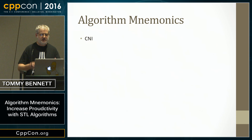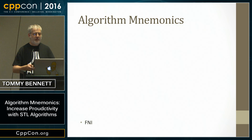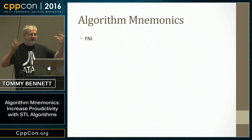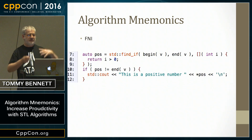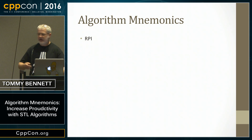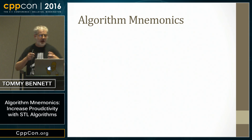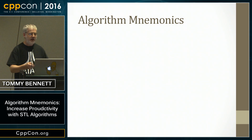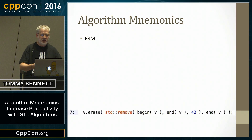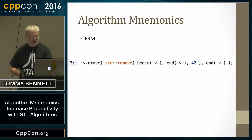What if CI could expand to this? Or what about FI — and all of a sudden this all appears? What about RPI, and this all appears? And it works for idioms too, like the erase-remove idiom — ERM expands to all this. You're saying, well, this really sounds cool Tom, but how would that actually work? Let's go to the video.